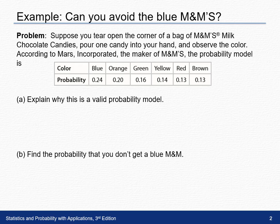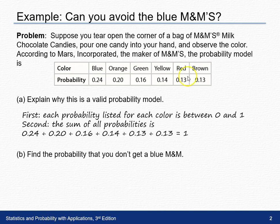Part A asks us to explain why this is a valid probability model. There are two things we must check in order to prove that something is a valid probability model. One is that each probability listed is between 0 and 1, and we can see that here through the listed decimals.